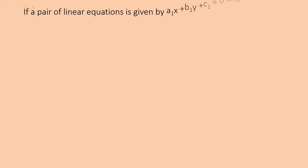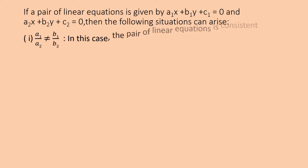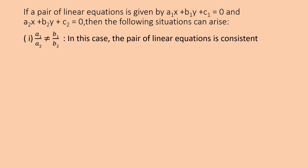If a pair of linear equations is given by a1x + b1y + c1 = 0 and a2x + b2y + c2 = 0, the following situations can arise. First condition: when a1/a2 ≠ b1/b2, where a1 and a2 are coefficients of x, and b1, b2 are coefficients of y. In this case, the pair of linear equations is consistent — drawing the graph gives intersecting lines, meaning it has only one solution.